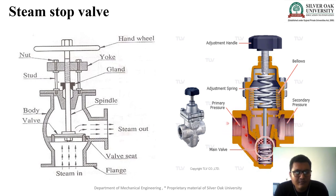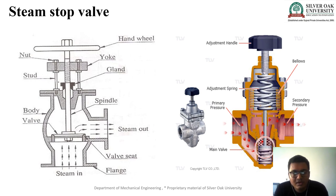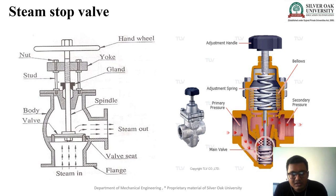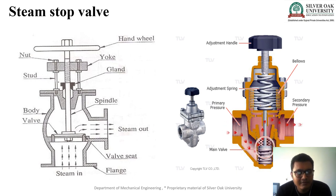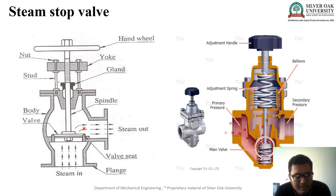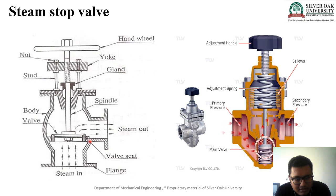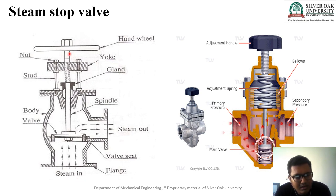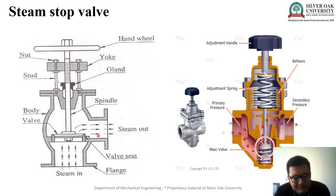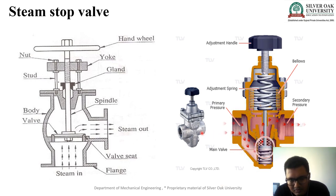Now we talk about the steam stop valve. Its function is: whatever steam is generated inside the boiler, using the steam stop valve, it gets transferred from the boiler to the required machine or position where steam is needed. With the help of a hand wheel, we rotate it — the valve goes up, the steam space is opened, and steam is transferred. When steam transfer is not required, we rotate the hand wheel again to close the valve.